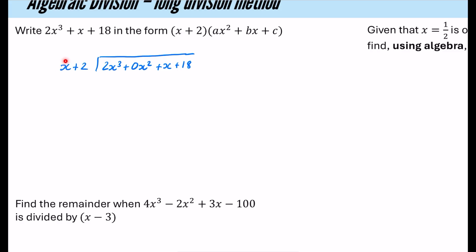You're always looking at the most dominant term — the one with the highest power. We do 2x³ divided by x, which is 2x². Put that in the x² column. Then multiply 2x² by (x+2), which gives 2x³ and 4x². Next, subtract so they cancel. We have 0x² minus 4x², which is minus 4x². Pull down that x as well.